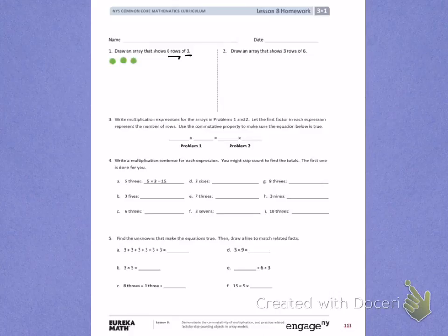1, 2, 3. 1, 2, 3. There's 2 rows. 3rd row of 3. 4th row of 3. 5th row of 3. And 6th row of 3.